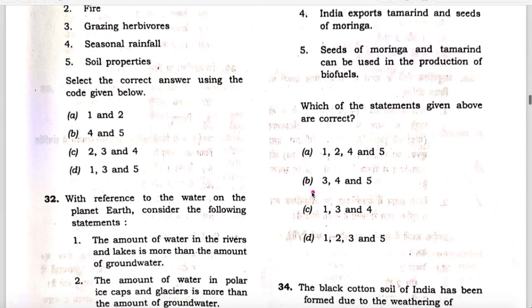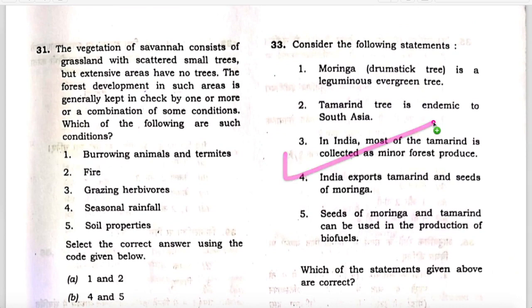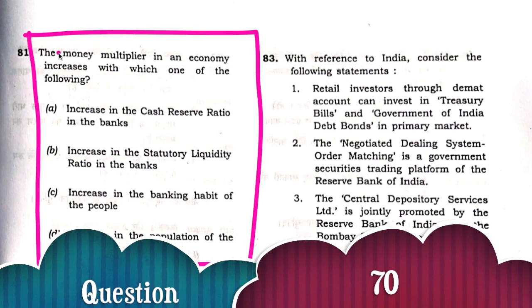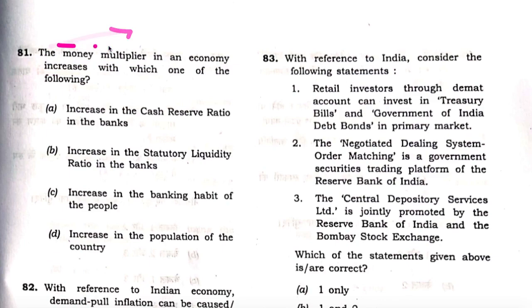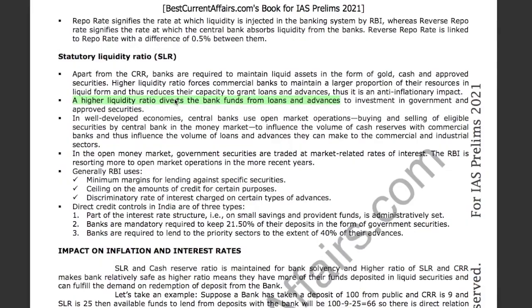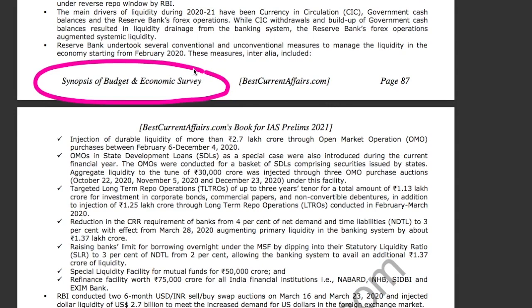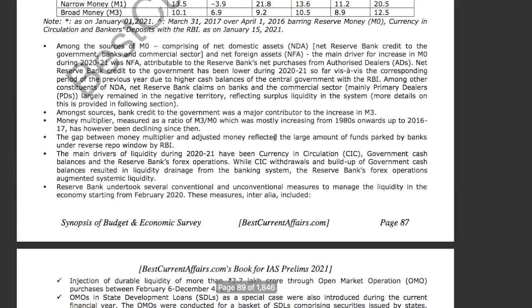Next question: The money multiplier in an economy increases with which one of the following? Four situations are given. The money multiplier increases in the economy when banks give more loans, more credit, more advances into the economy. From our synopsis of budget and economic survey for IAS Prelims 2021, page 87, the money multiplier was mostly increasing from the 1980s up to 2016-17, but has been declining since then because large amounts of funds are parked in the banks and banks are not able to lend more.